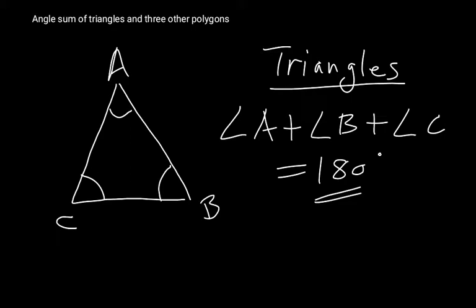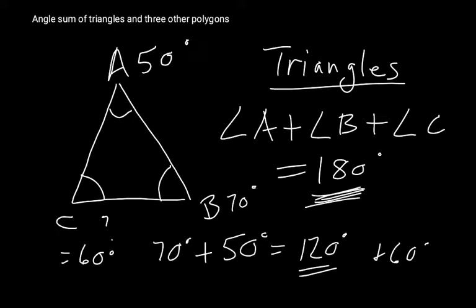So for example, if we know that angle A is 50 degrees and angle B is 70 degrees, and we don't know what C is, we can work it out by saying that 70 degrees plus 50 degrees is 120 degrees.